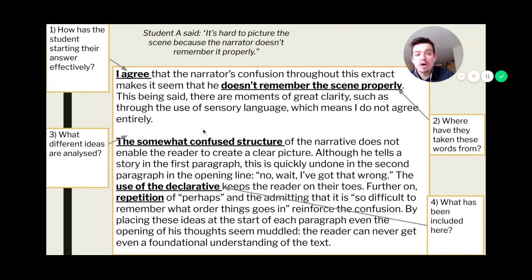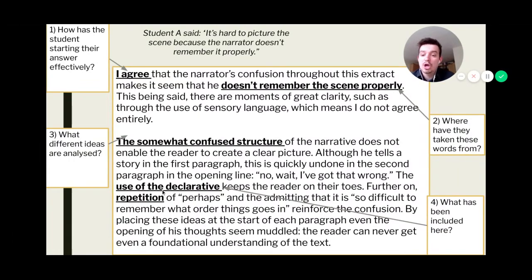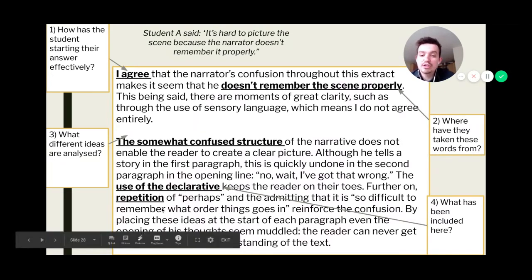When you move on to your second paragraph, that is going to need to be the analysis. What different ideas are analysed? You need to analyse potentially the language, but also the structure. This is looking at both of those ideas, because remember we said that this is worth the same amount of marks as questions one to three. So actually we're looking for both language and structural analysis. The somewhat confused structure of the narrative does not enable the reader to create a clear picture. So therefore you're analysing the structure there. And don't forget here, what has been included? Your specific language techniques, your subject terminology. As we identified in our previous examples, use of repetition keeps the reader on their toes. The repetition of perhaps, and the admitting it is so difficult, reinforce the confusion. So as you will see, our first paragraph, very short, just giving our sense of evaluation. And then from then on, you're doing your analysis similar to what we see in questions two and three.